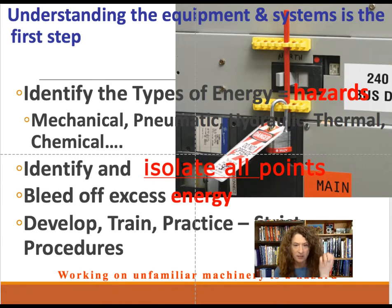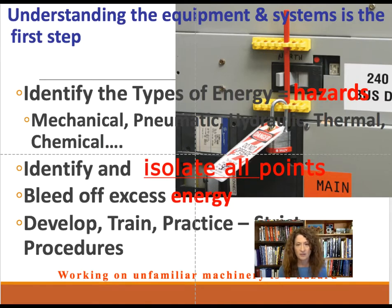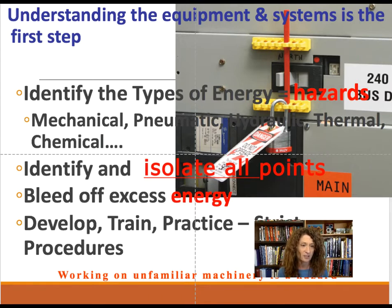You have to understand how energy can be released and what kind of energy could cause injury. Identify all the points where energy enters the system or can be released. This isn't just unplugging something — if there's built-up pressure or energy in a capacitor, you have to identify and bleed it off. Most workplaces have pre-written lockout-tagout procedures. Writing these SOPs and reviewing material safety data sheets are good tasks for people just getting into the industry.